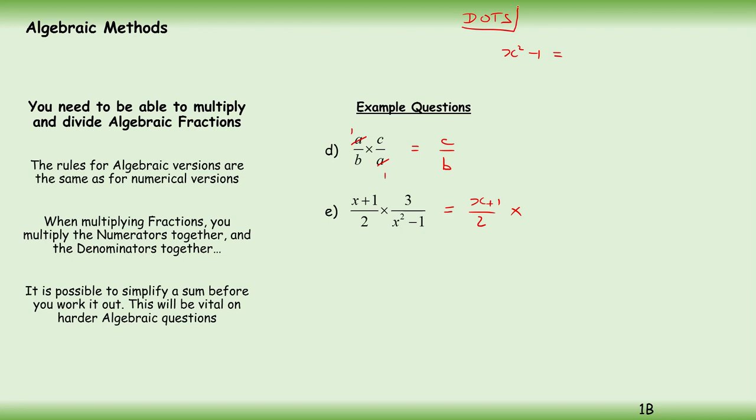So I can expand this out as x plus 1 times x minus 1. That gives me 3 divided by x plus 1 times x minus 1. Now I've got an x plus 1 here—goes into itself one time. That leaves me with 3 divided by 2 times x minus 1. So two brackets: x minus 1.